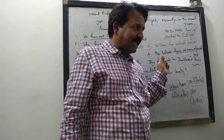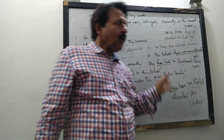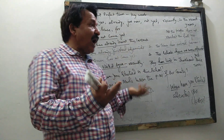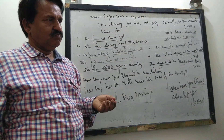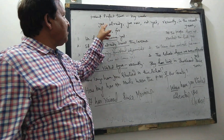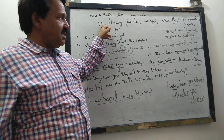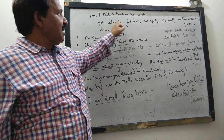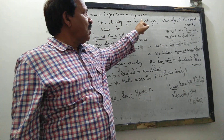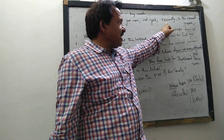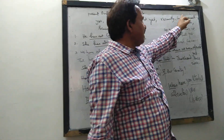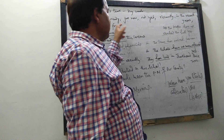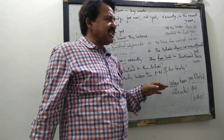We have finished a little bit of Present Perfect Tense. Now you ask: what are the keywords? The keywords are: yet, already, just now, not yet, recently, in the recent years, since, for, and since then.